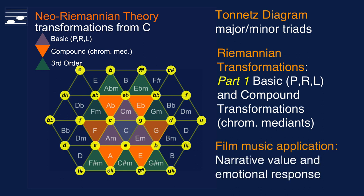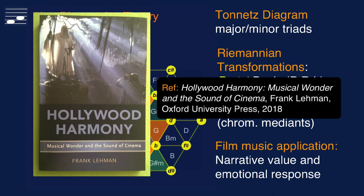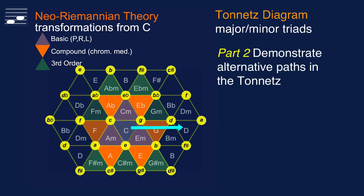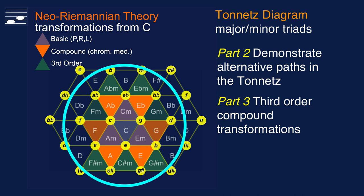In particular, chromatic medians achieved through compound transformations have a narrative value in film music, the central concept in the book by Frank Lehmann on Hollywood harmony. In my video tutorials you'll find cinematic idiom examples for all possible transformations. In part 2 I demonstrated various alternative meandering trajectories in the Tonnetz for a dominant pedal point chord progression example. And in part 3 the focus was on third order compound transformations.